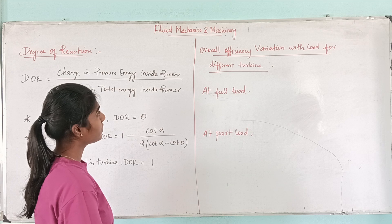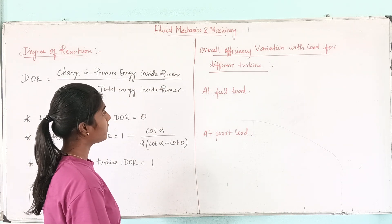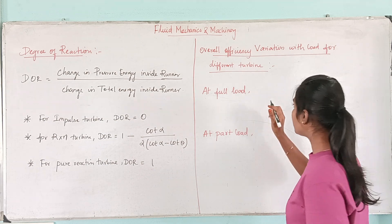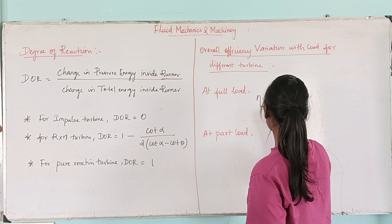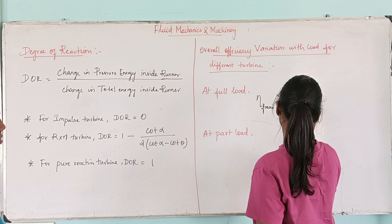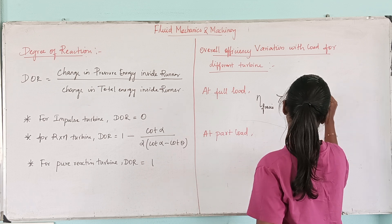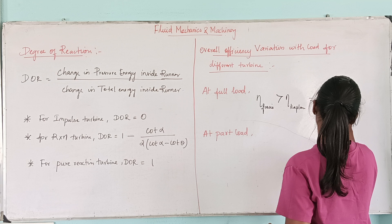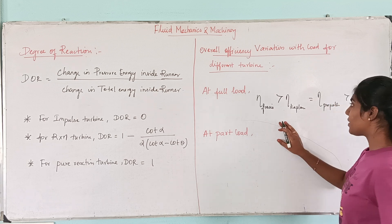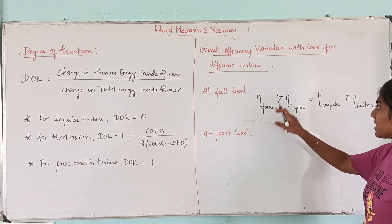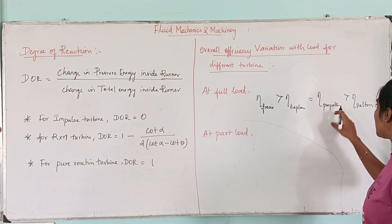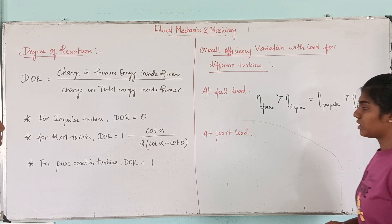Next, the overall efficiency variation with load for different turbines at full load. At full load: efficiency of Francis is greater than efficiency of Kaplan, which is equal to efficiency of propeller, which is greater than efficiency of Pelton and so on.